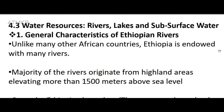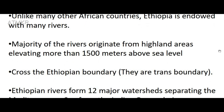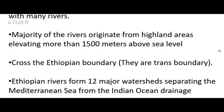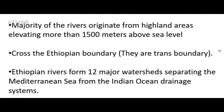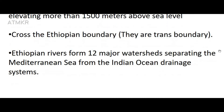Section 4.3: Water Resources — Rivers, Lakes, and Subsurface Water. General characteristics of Ethiopian rivers: unlike many other African countries, Ethiopia is endowed with many rivers. The majority of rivers originate from highland areas elevating more than 1,500 meters above sea level and cross the Ethiopian boundary — they are trans-boundary. Ethiopian rivers form 12 major watersheds separating the Mediterranean Sea from the Indian Ocean drainage systems.